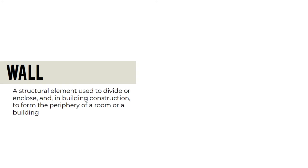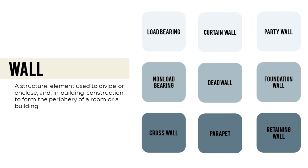A wall is a structural element used to divide or enclose, and in building construction to form the periphery of a room or a building. A load-bearing wall supports any load other than its own weight. A non-load-bearing wall supports no load other than its own weight. A cross wall is a term used synonymously with a partition. A curtain wall is the enclosing wall of an iron or steel framework, or the non-bearing portion of an enclosing wall between piers.